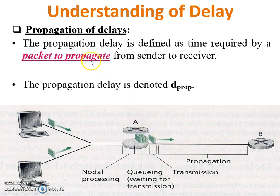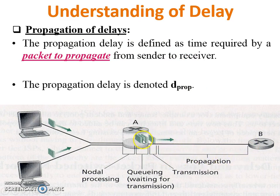Propagation delay. The propagation delay is defined as the time required by a packet to propagate from sender to receiver. In this figure, if one packet comes from router A to router B, the time when the packet reaches router B is called propagation delay. The propagation delay is denoted by D propagation.